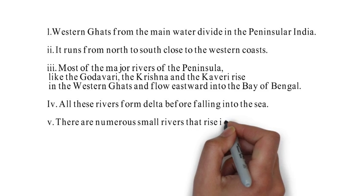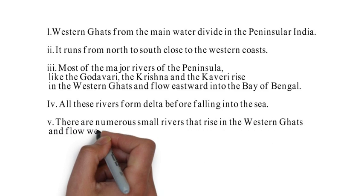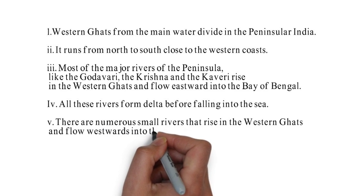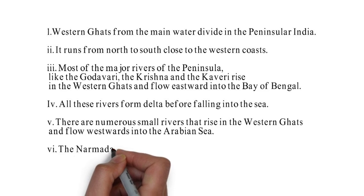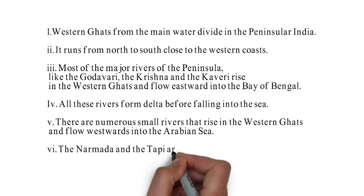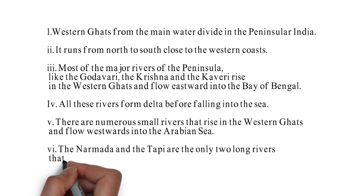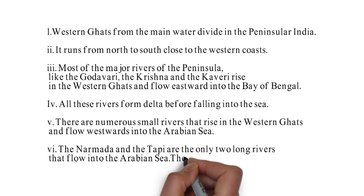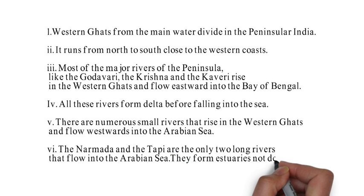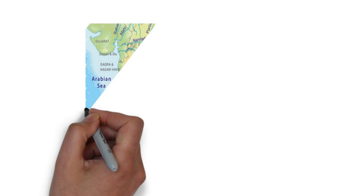There are two exceptions: Narmada and Tapi, which flow through a rift valley and drain into the Arabian Sea. Rivers like Godavari, Krishna, and Kaveri, which drain into the Bay of Bengal, form deltas before falling into the sea because they slow down and shed most of their sediments. Narmada and Tapi, which flow through the rift valley, do not form deltas — they form estuaries.